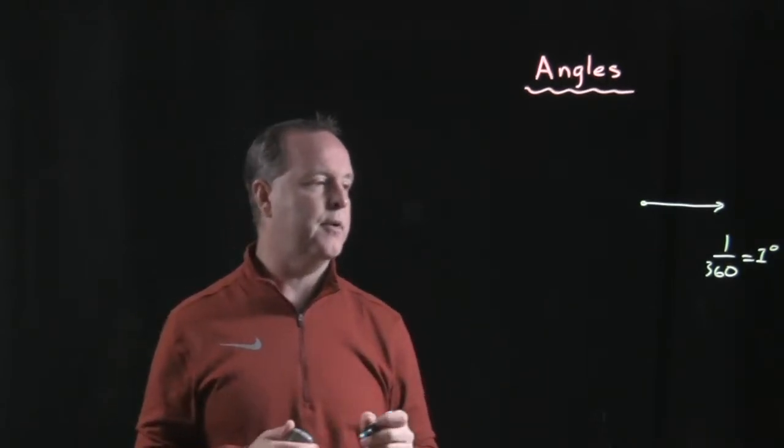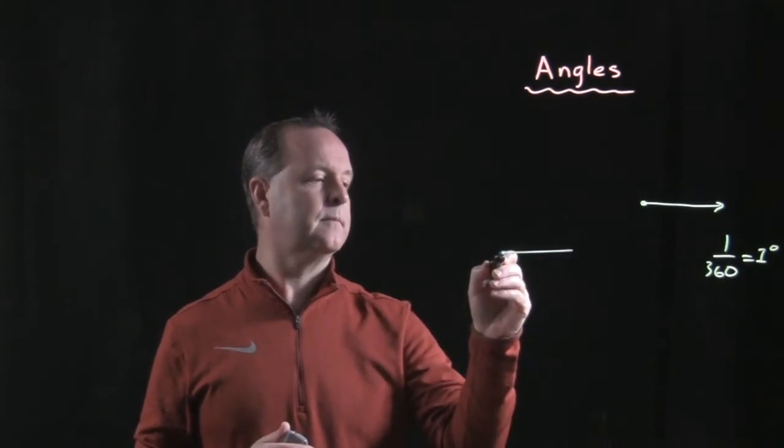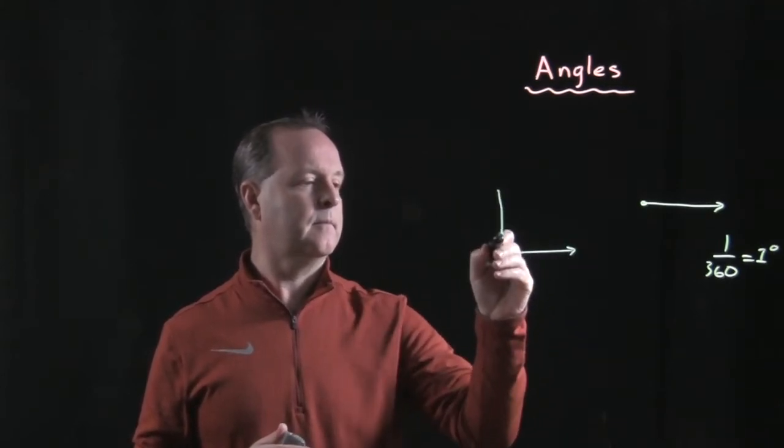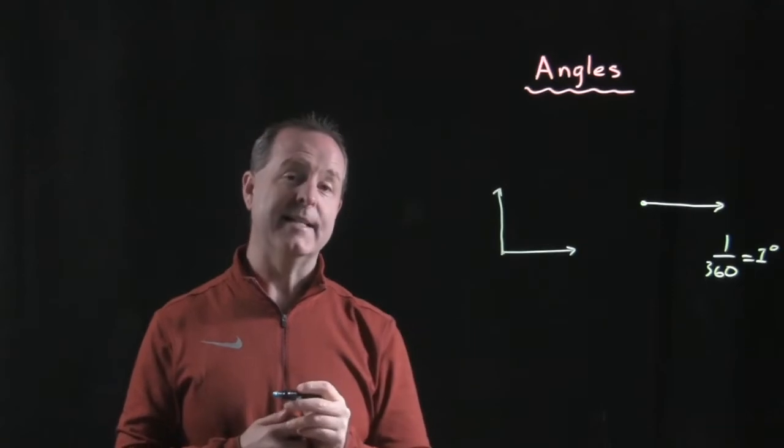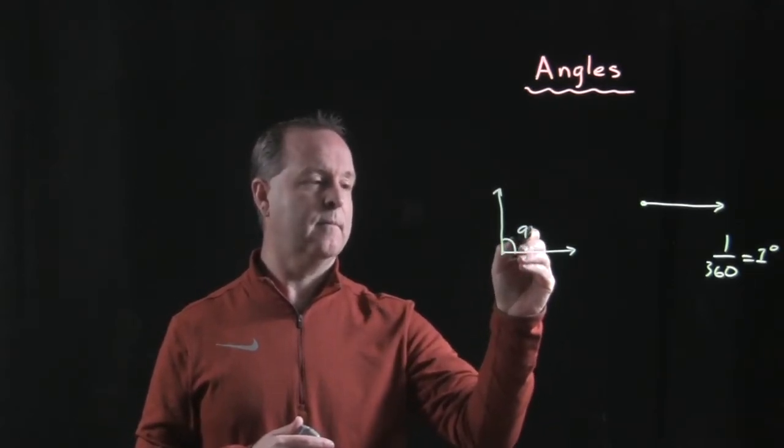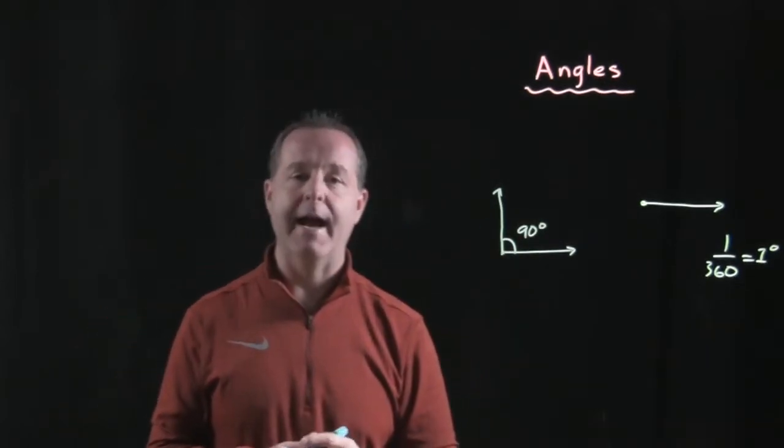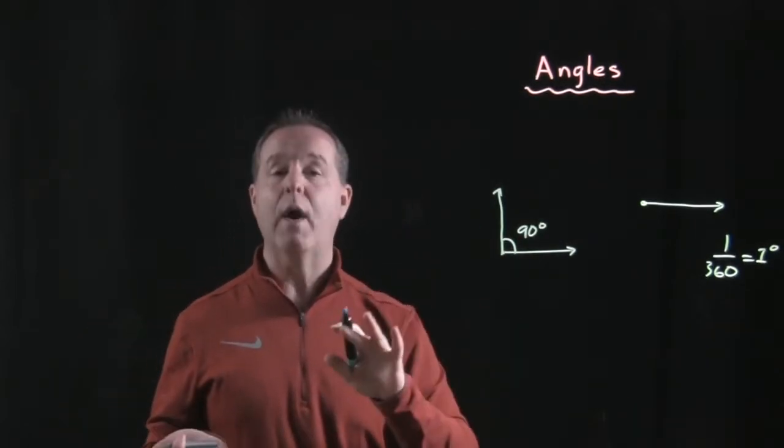So if I have an angle that is 90 of those degrees, this angle right there is 90 degrees. We would call that a square angle or a right angle.